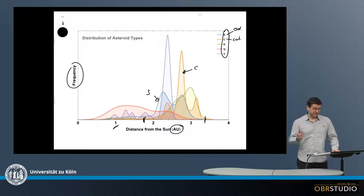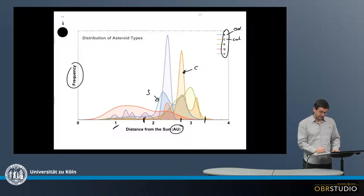As can be seen, the C-type asteroids have a peak at about 2.7 astronomical units but also smaller ones here and here. The S-type asteroids have a peak at about 2.7 but also at something like 2.2.